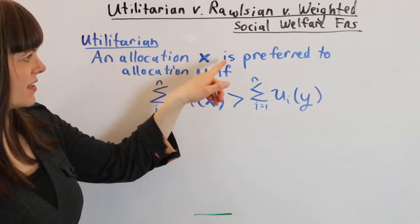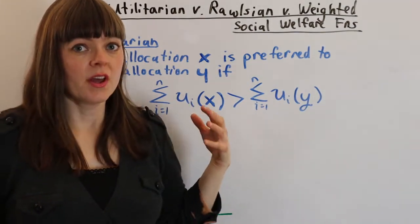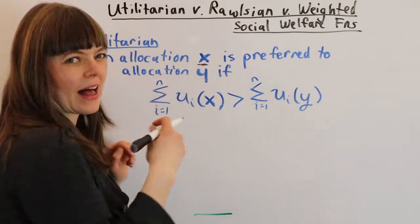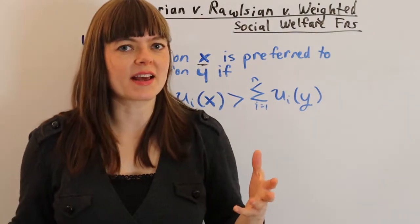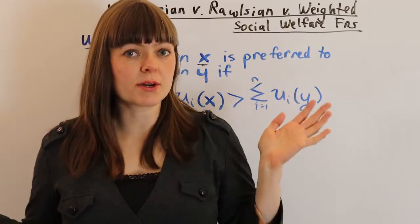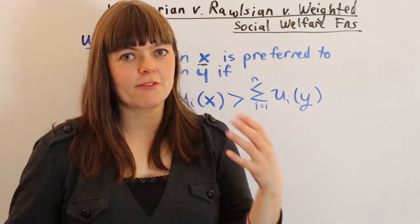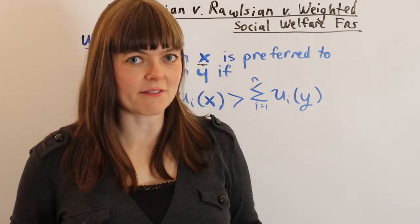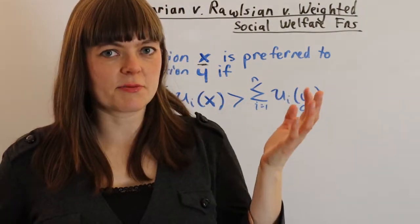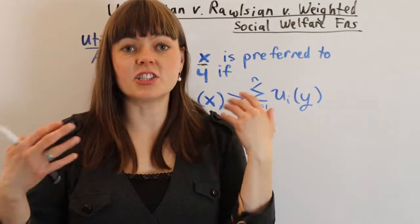An allocation X is preferred to an allocation Y if this statement is true. To think about that, first we have to know how do we think about an allocation X. If we use our roommate example, imagine there's three roommates and there's 21 meals during the week. The roommates have to decide who gets to use the kitchen for what meals since the kitchen is only big enough for one person per meal.